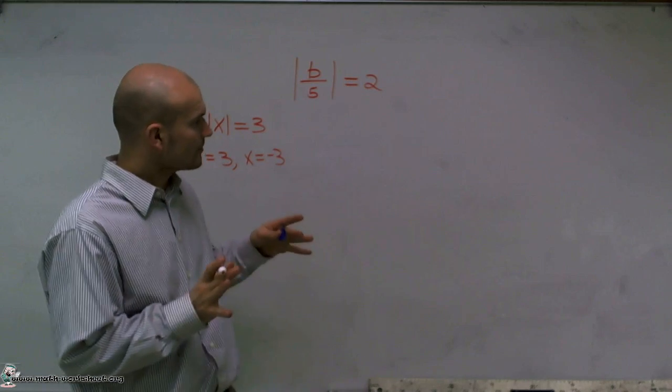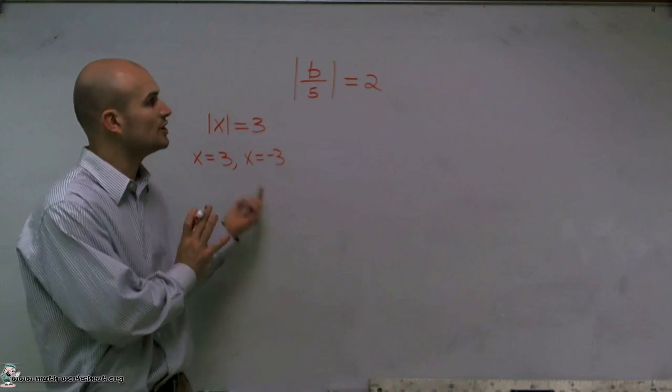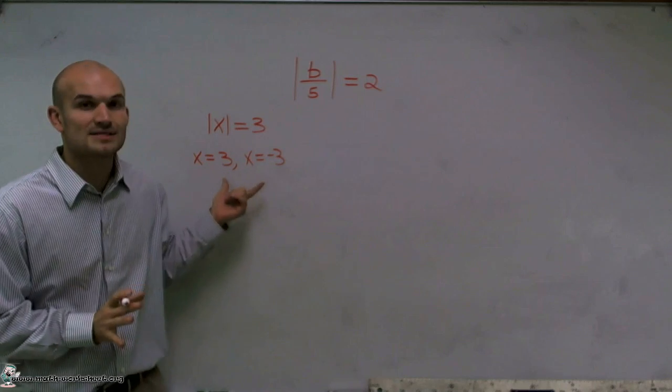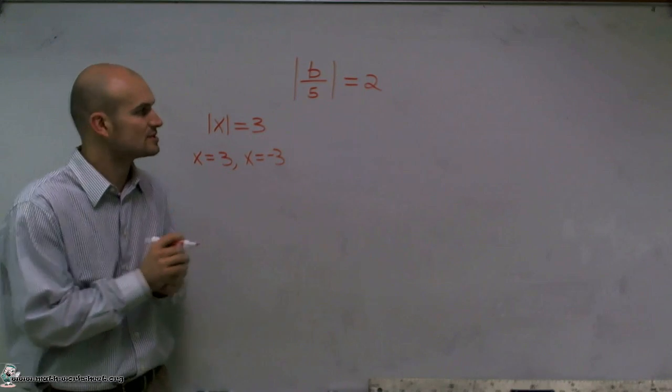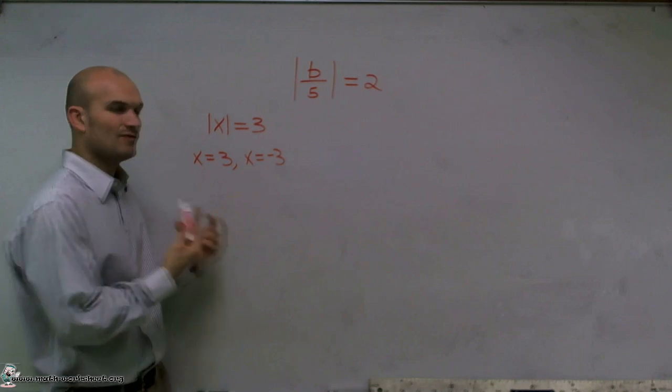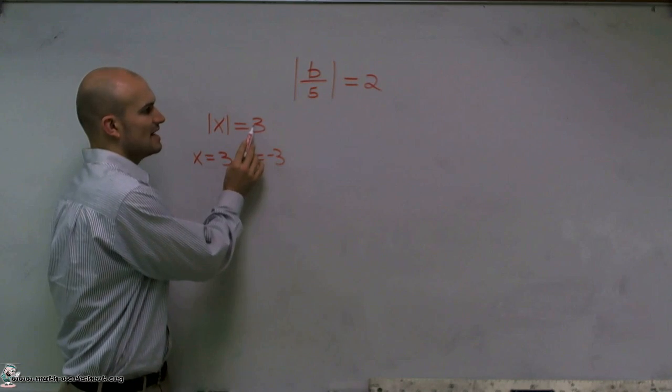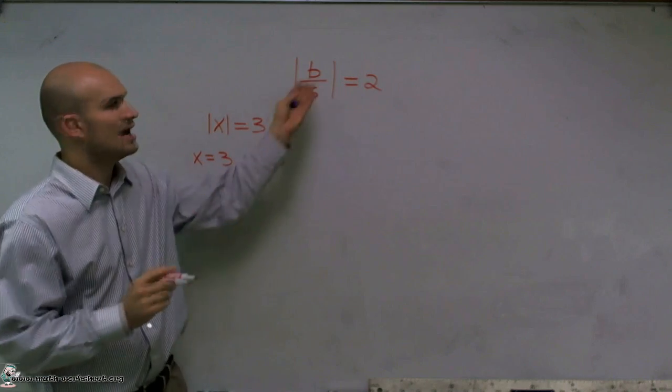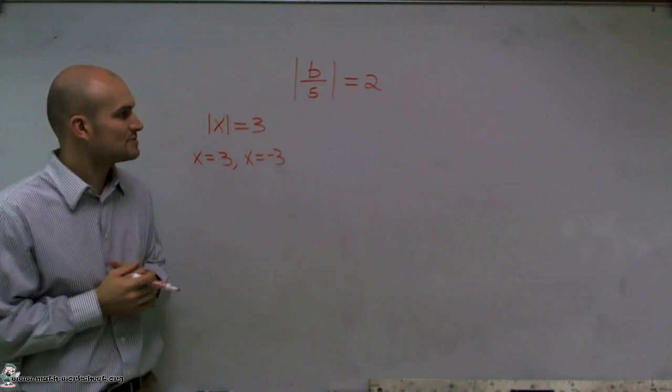So when solving absolute value equations it's very important for you to understand that there's a possibility of having two solutions. A really basic way to handle this is to set a positive and a negative answer and then solve for our variable inside the absolute value.